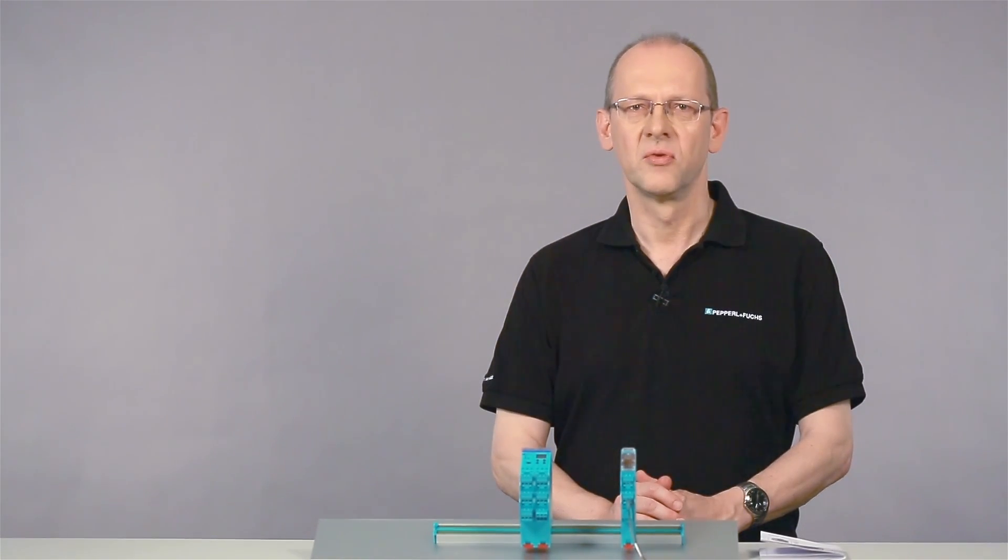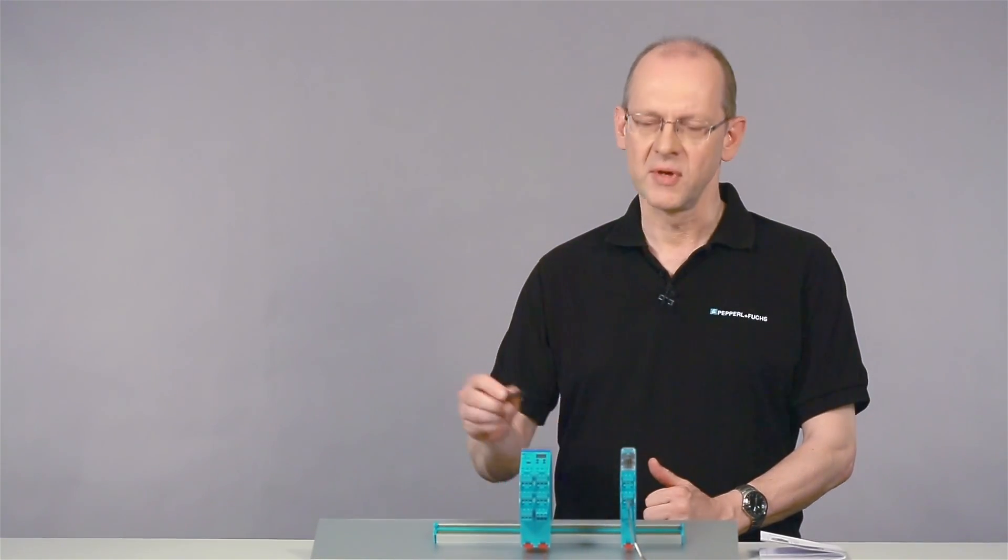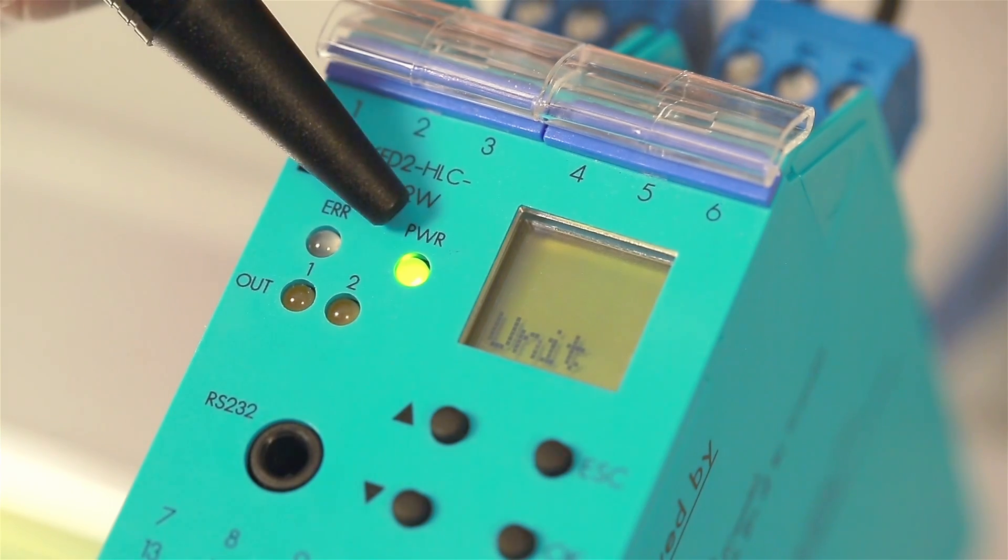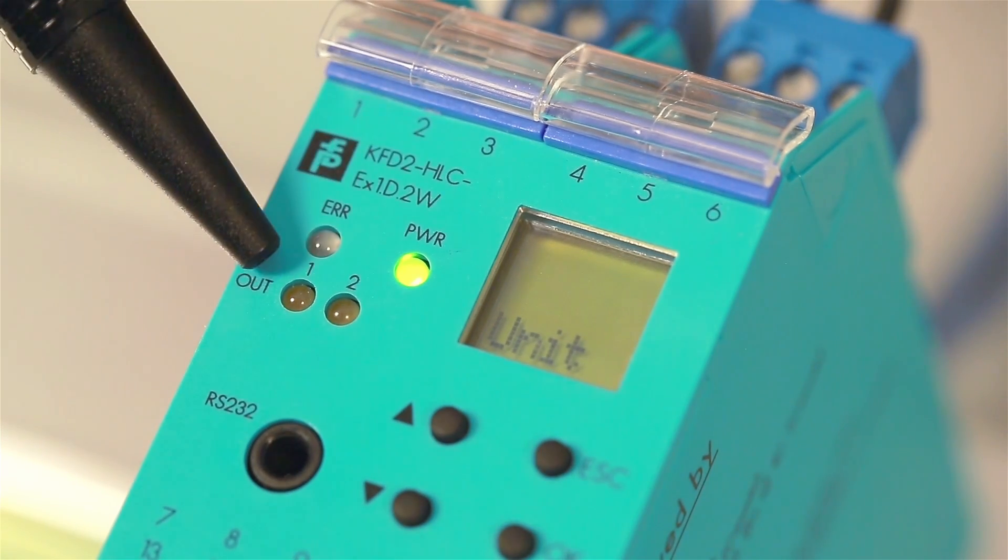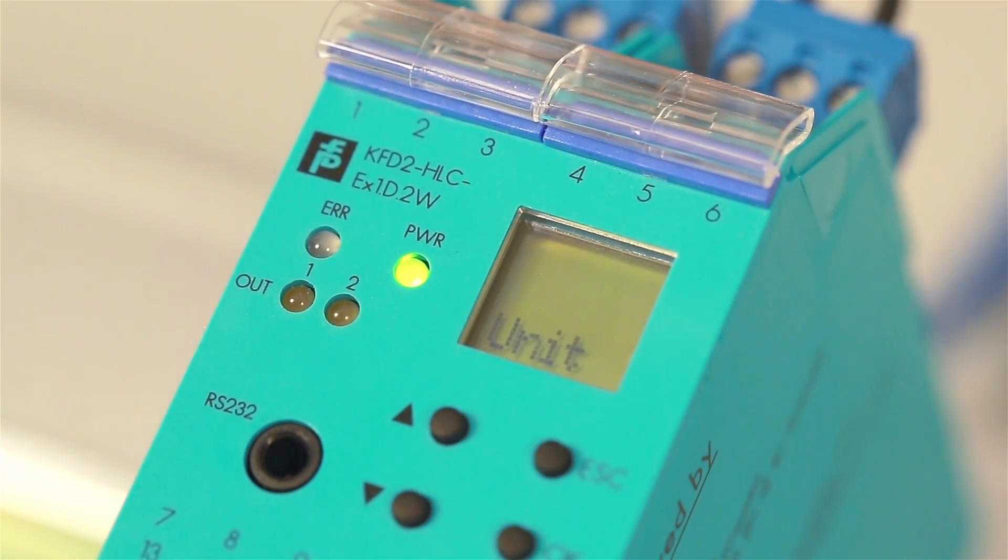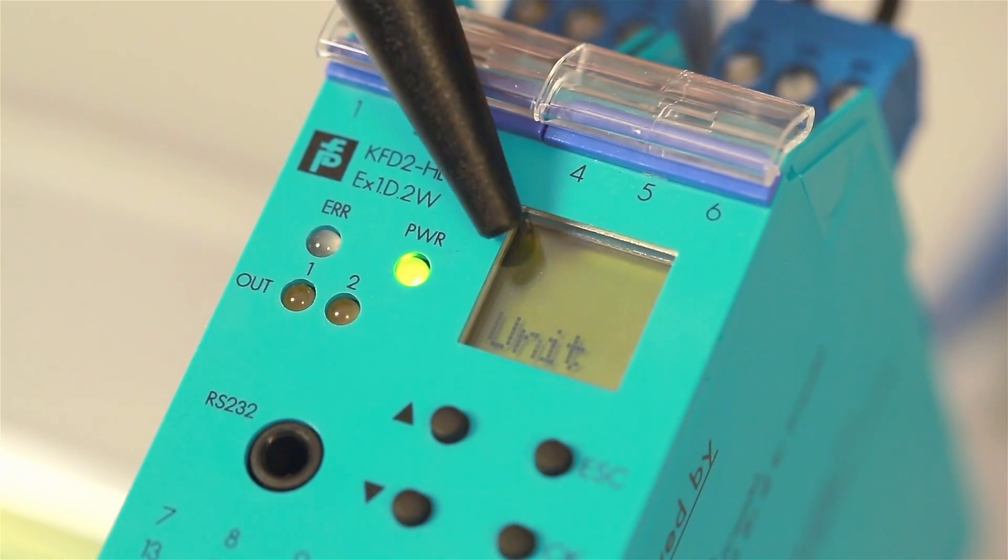On the hard loop converter's front side, you see various LEDs. The red one indicates faults, the green one is the power supply, and the yellow ones indicate the relay status of the outputs. The display shows measured values, current output values, and fault messages.